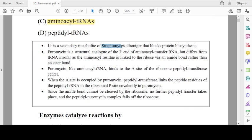Let me give you some information about this puromycin. First, puromycin is a secondary metabolite isolated from Streptomyces alboniger that blocks protein biosynthesis. Puromycin is a structural analog of the 3' end of aminoacyl-transfer RNA, but differs from tRNA insofar as the aminoacyl residue is linked to the ribose via an amide bond rather than an ester bond. This puromycin, like aminoacyl tRNA, binds to the A site of the ribosome.